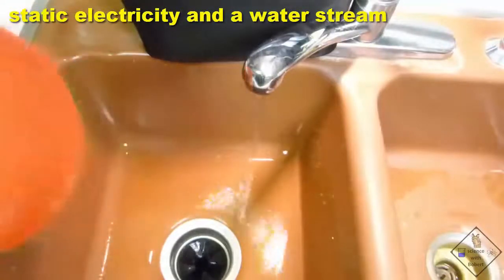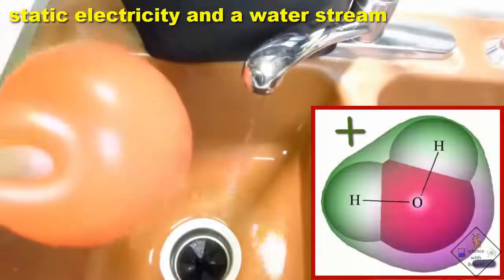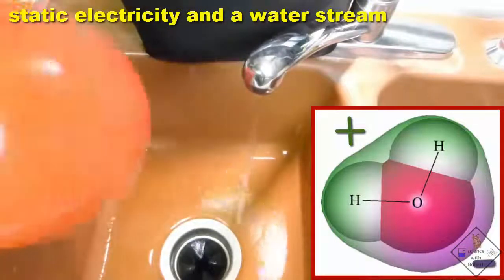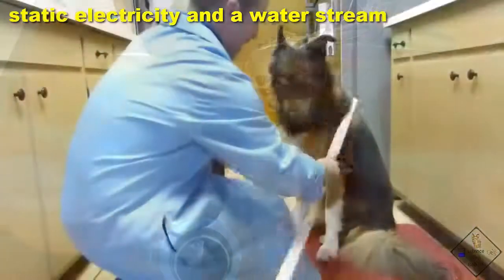This happens because water is a polar molecule, meaning that different sides of the water molecule have a different charge. So when a charged object like a balloon is placed next to a stream of water, the water moves. You can do the same thing with a PVC pipe.